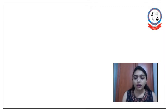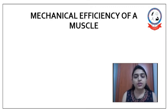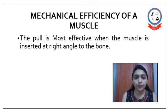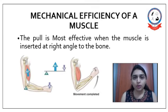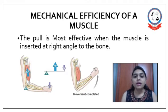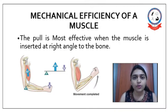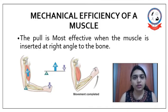So first we will see the mechanical efficiency of a muscle. The pull is most effective when the muscle is inserted at right angle to the bone. The pull or force of contraction of the muscle is most effective at 90 degrees, where the rotatory component is equal to that of the force of action, and it is most effective here.